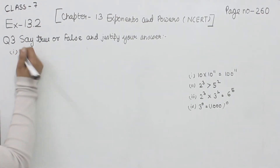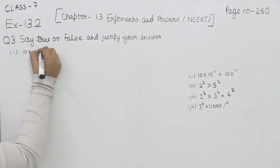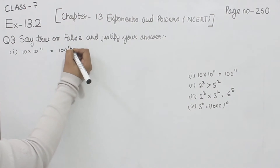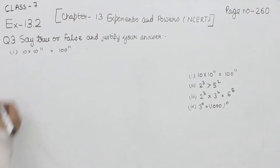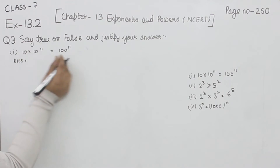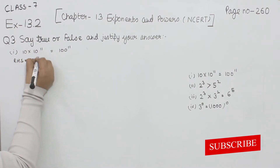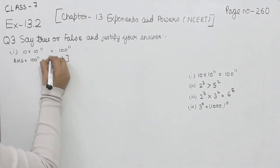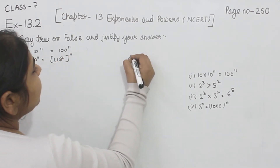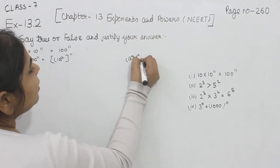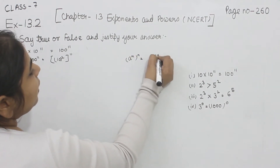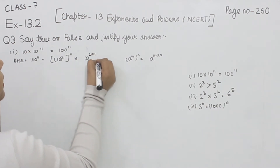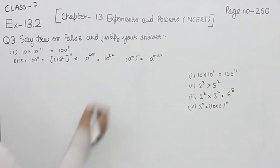In the first part we have 10 multiplied by 10 to the power 11, and this is equal to 100 to the power 11. First, taking the right hand side, we have 100 to the power 11. I can write 100 as 10 to the power 2, whole power 11. Applying the rule (a^m)^n = a^(m×n), we get 10 to the power 2 multiplied by 11, which is 10 to the power 22.